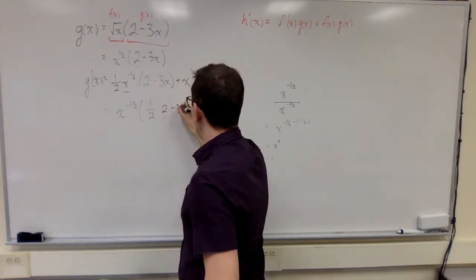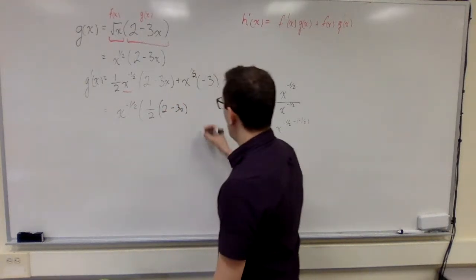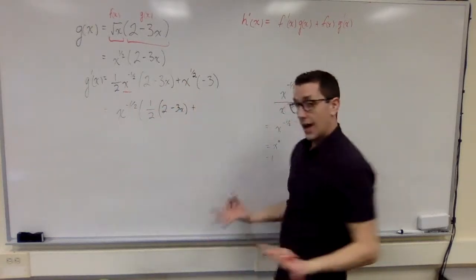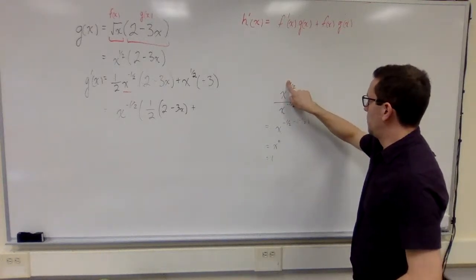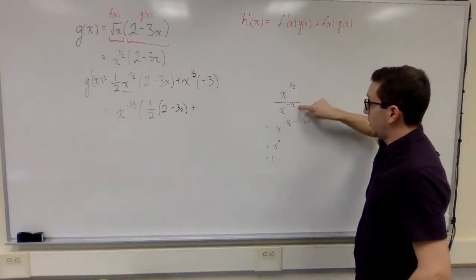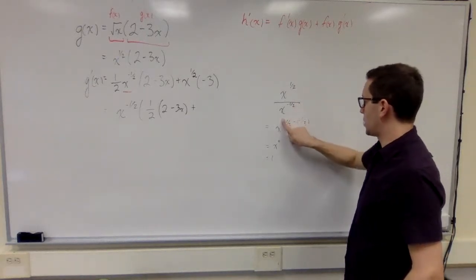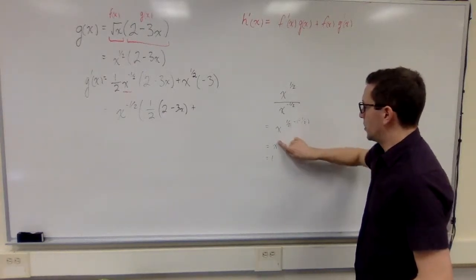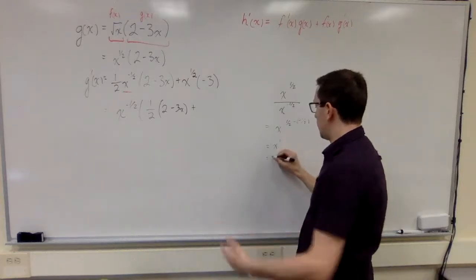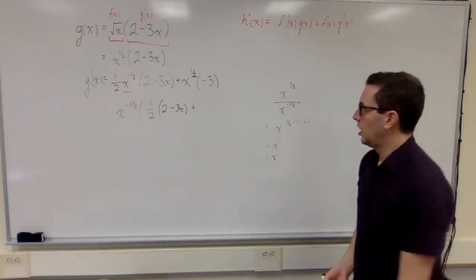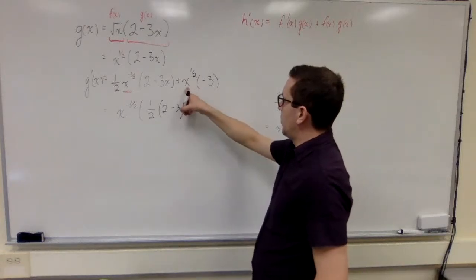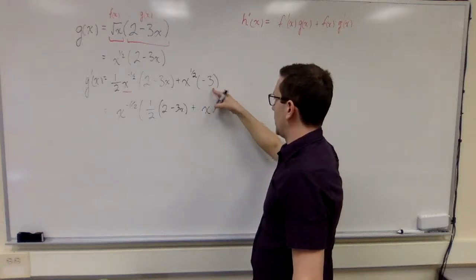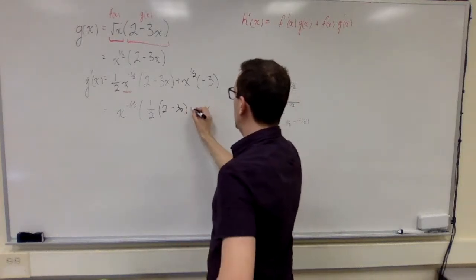Next, I look at what happens when I factor x to the minus a half out of x to the half. I'm dividing x to the half by x to the negative a half, so I subtract the exponents: a half minus negative a half gives a half plus a half, which equals one. So I have x to the power of one, also known as x. Taking x to the minus a half out of x to the half, I'm left with x times negative three, which is minus three x.